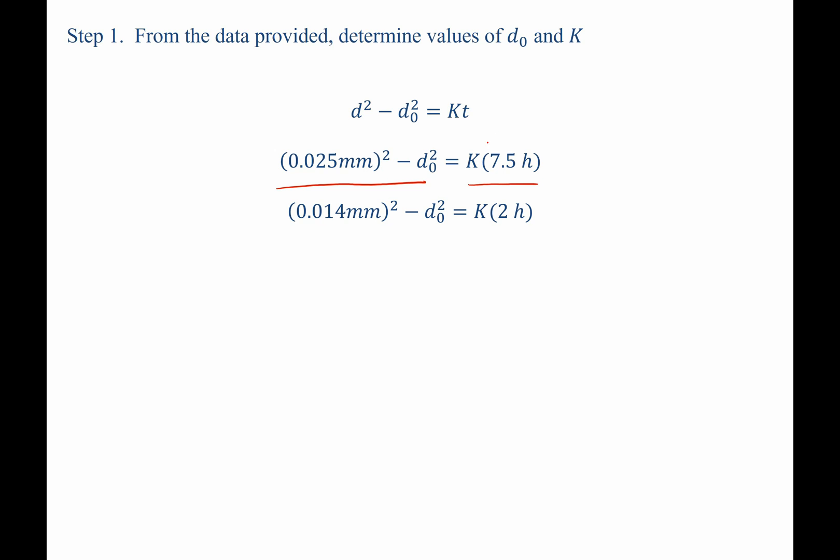That allows hours to cancel, and more importantly, K to cancel. Now we only have one unknown, d-naught. The best way to solve this is to do cross-multiplication. So this whole term gets multiplied by this term. This term gets multiplied by this whole term up top here.